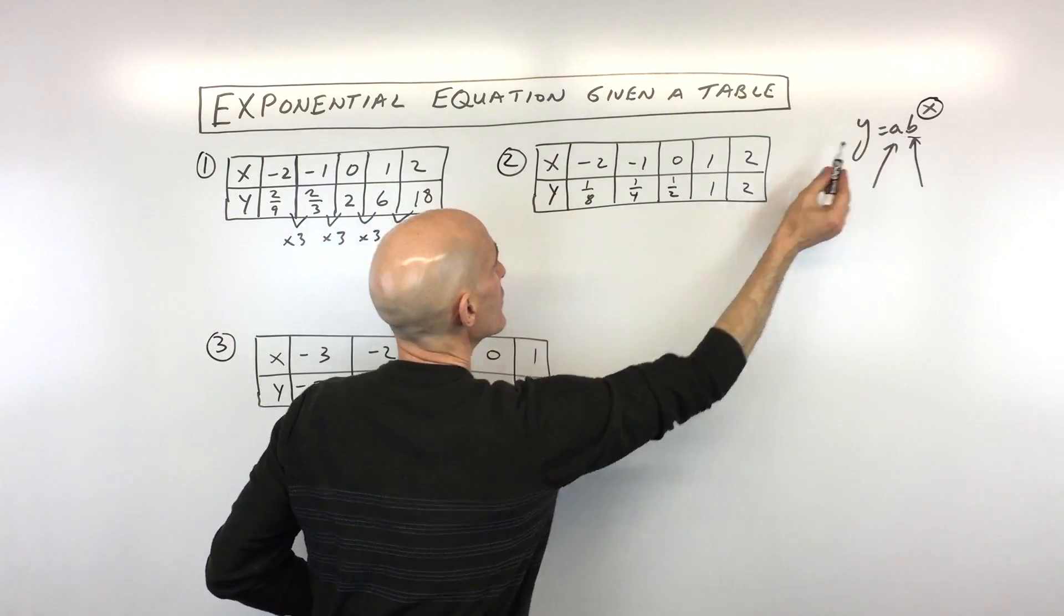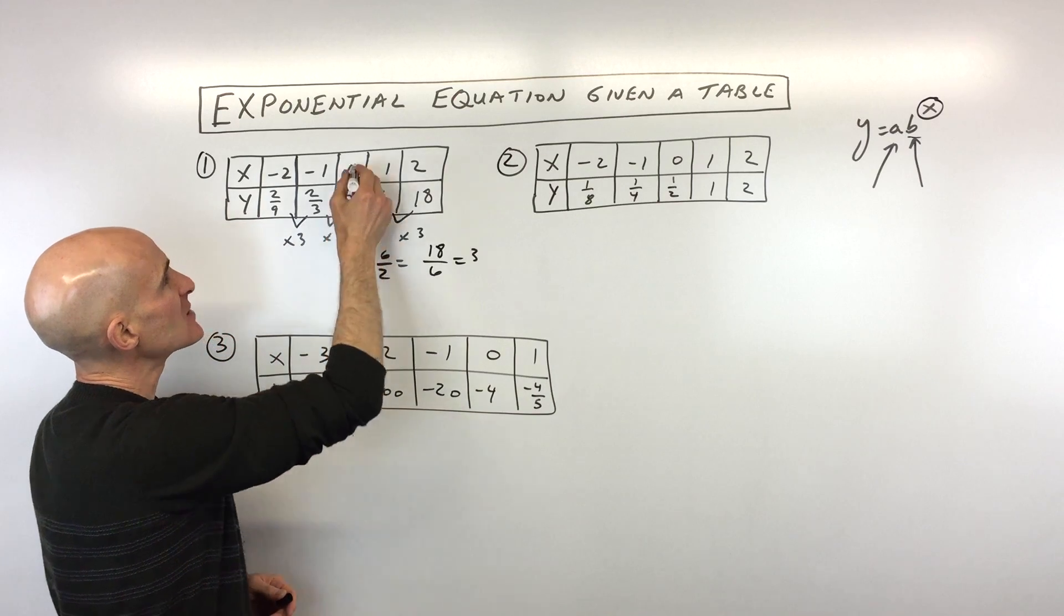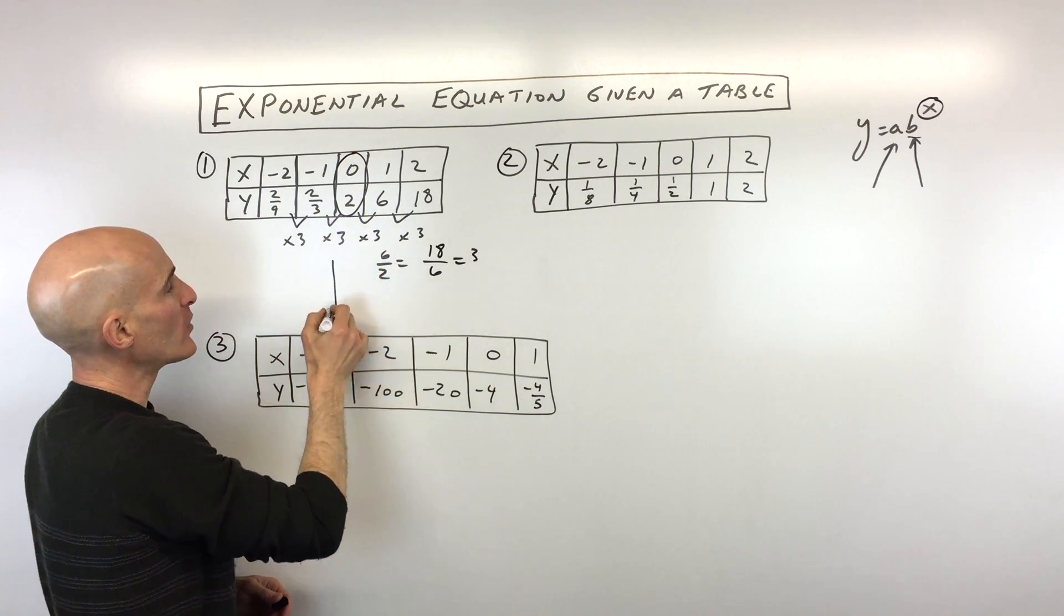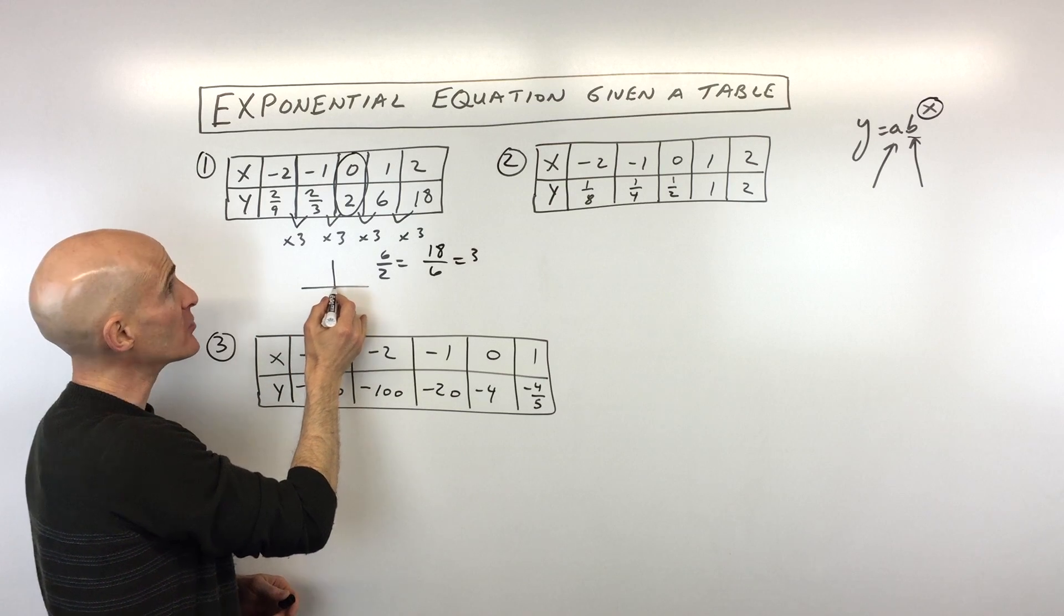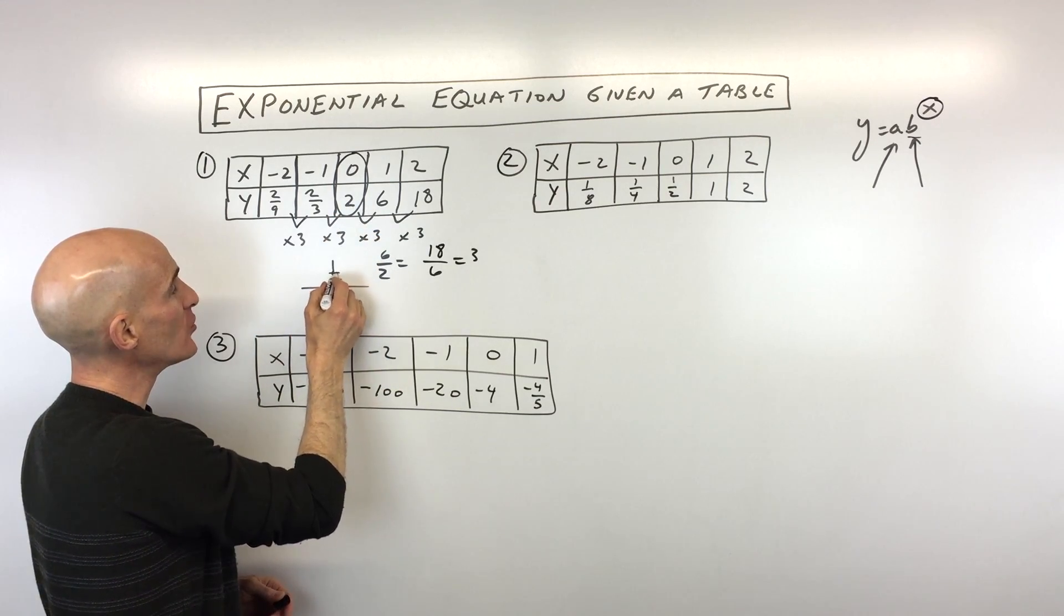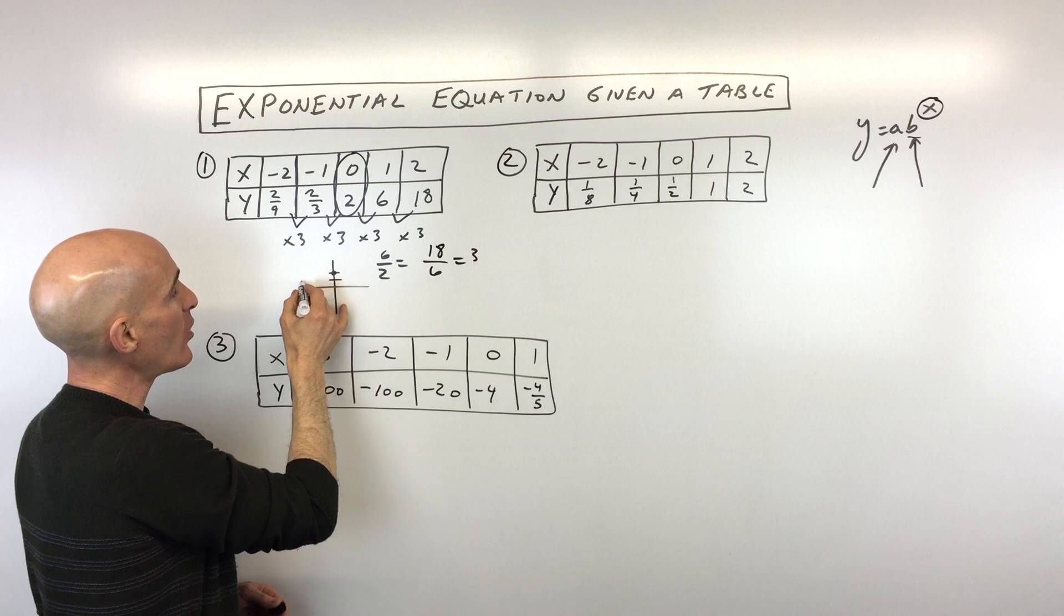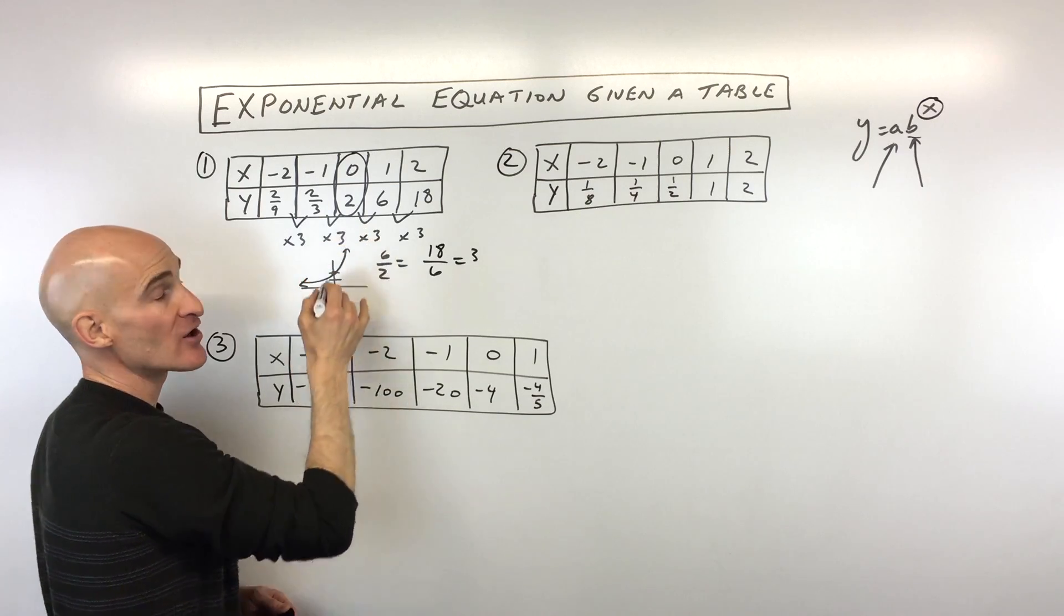We know that we're multiplying by three, so that's our b value right here. Our initial condition is when x is zero—that's our y-intercept. Remember, when x is zero, you're not going left or right, you're just going, in this case, up two. That's your y-intercept, then you're multiplying by three, and you can see that's really taking off.